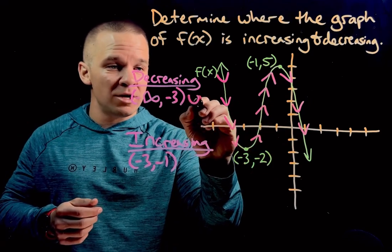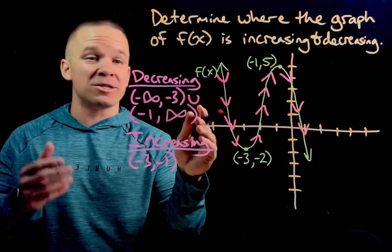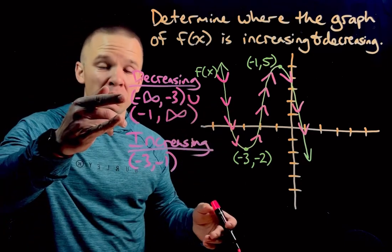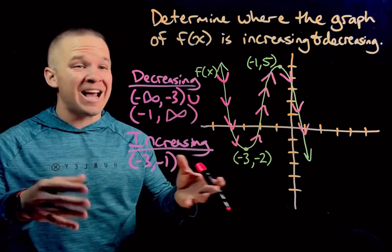So we'll have a little union here and then I'll write it down here. We're going to go from negative 1 to positive infinity. It's going to be decreasing. So we have two intervals of decreasing and one right in between that is increasing. That is it.